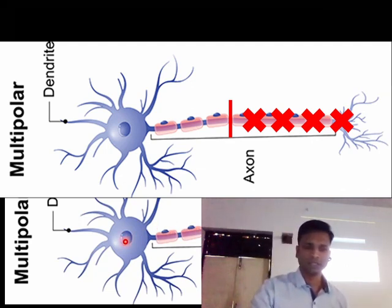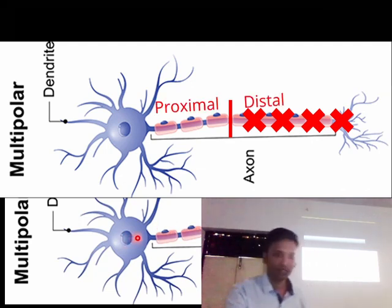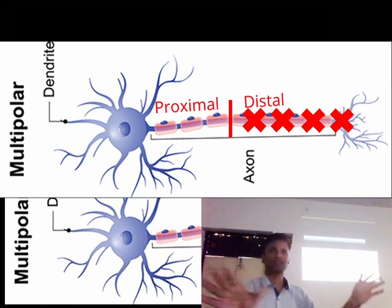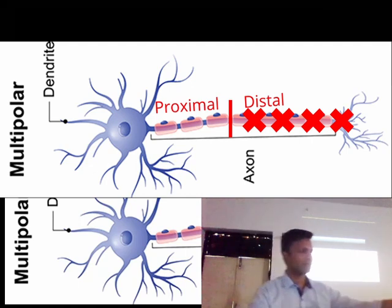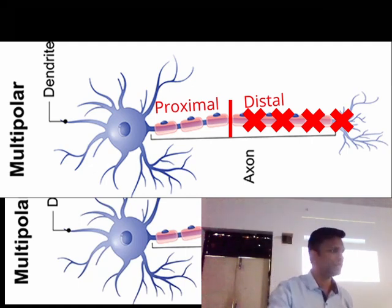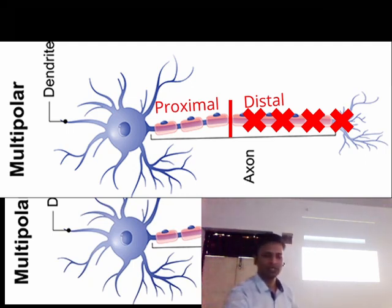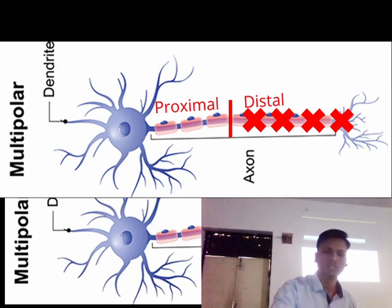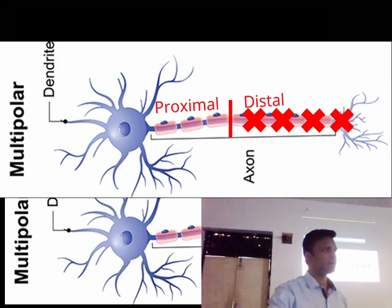Now the nutrition from the neuron cell body is not able to reach the distal portion. If you remember, the one that is away is distal and the one that is closer is proximal. So this is the distal segment, and it is not able to receive its nutrition.